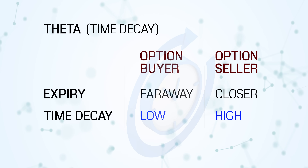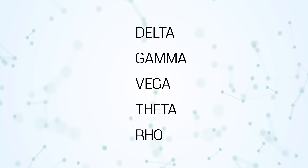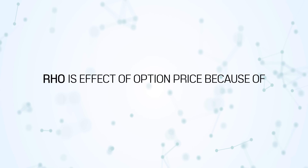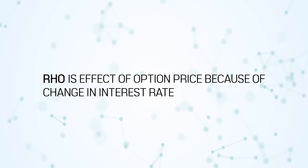We have discussed Delta, Gamma, Vega and Theta. The last one is Rho. Because Rho is not very important, I will explain it in this video rather than making a separate one. Rho is the effect on option price due to a change in interest rates. Many people sell options to make more money. If banks increase deposit rates to, say, 50% interest, nobody would bother selling options because the risk-free return is very high — why take risk when the bank gives so much? Option selling is a risky business where people expect good returns compared to fixed returns.